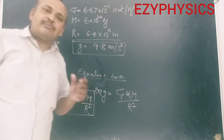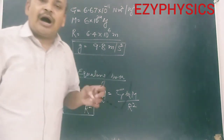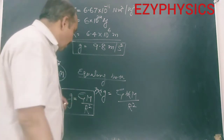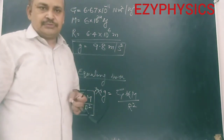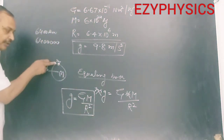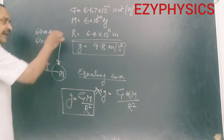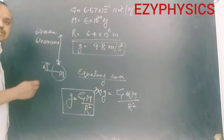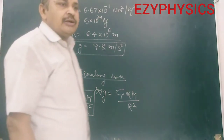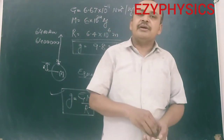Now we will study one important topic: how does the acceleration due to gravity, that is small g, vary with height? If we lift a body from the surface of the earth upward, the height changes — so how does the value of g change? This will be our topic in the next class.